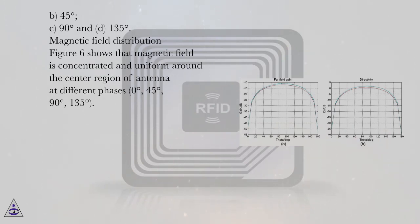Magnetic field distribution. Figure 6 shows that magnetic field is concentrated and uniform around the center region of antenna at different phases: 0 degrees, 45 degrees, 90 degrees, and 135 degrees.